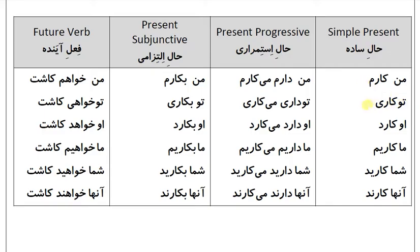Simple present: من می‌کارم، تو می‌کاری، او می‌کارد، ما می‌کاریم، شما می‌کارید، آنها می‌کارند. Present progressive: من دارم می‌کارم، تو داری می‌کاری، او دارد می‌کارد، ما داریم می‌کاریم، شما دارید می‌کارید، آنها دارند می‌کارند.